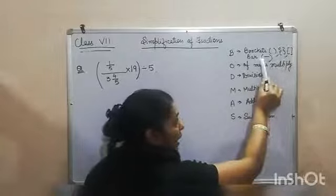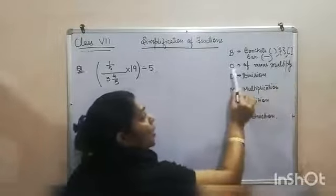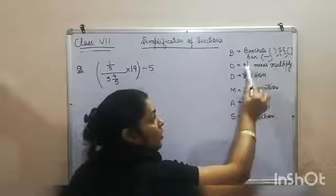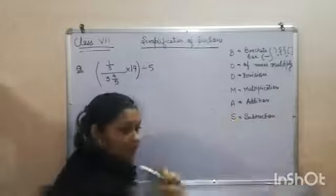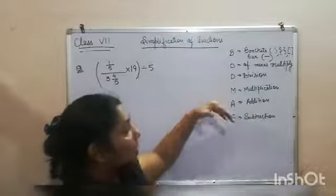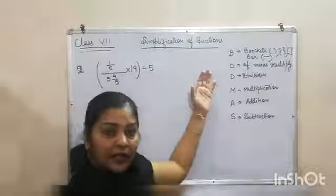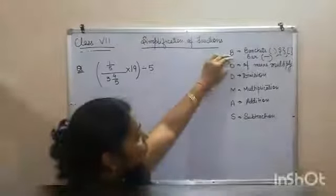We have to first of all solve BAR, then the brackets. OM is OF. What is the meaning of OF? That is multiplication. Sometimes we want that multiplication should be done before division. That's why we use OF.